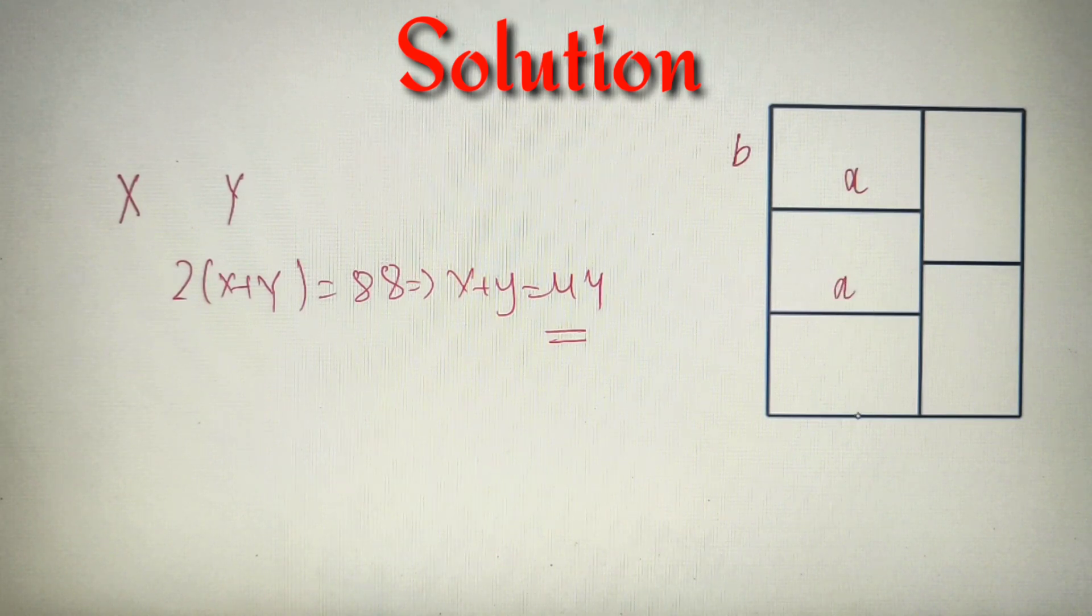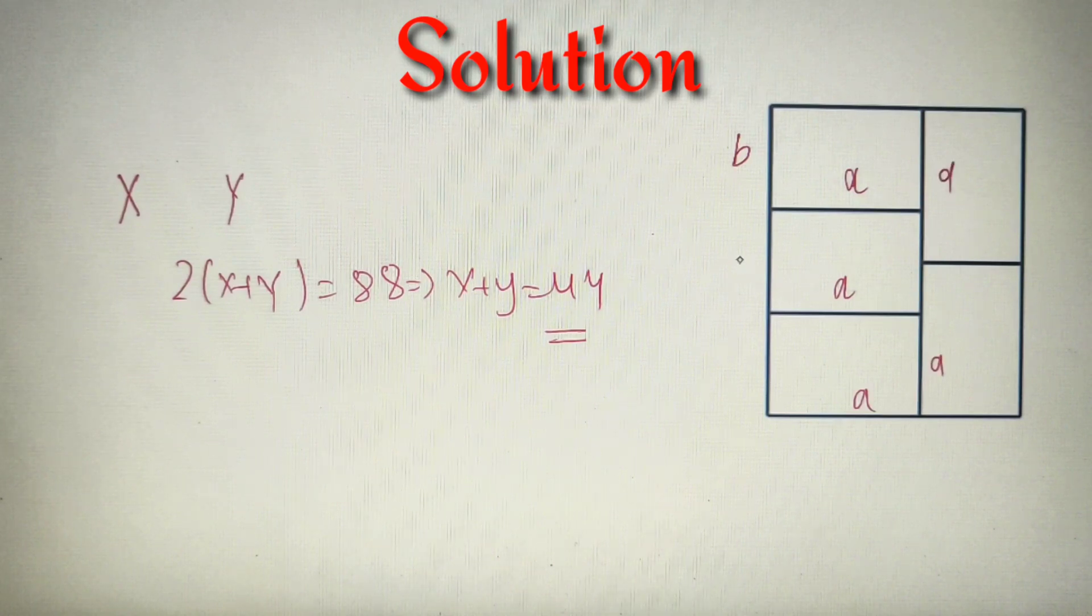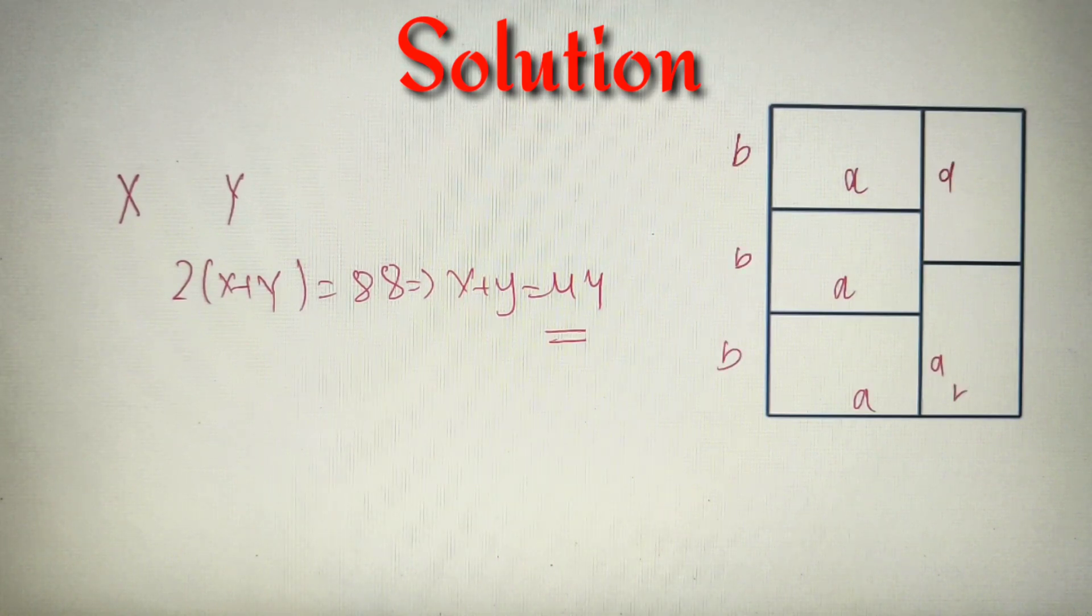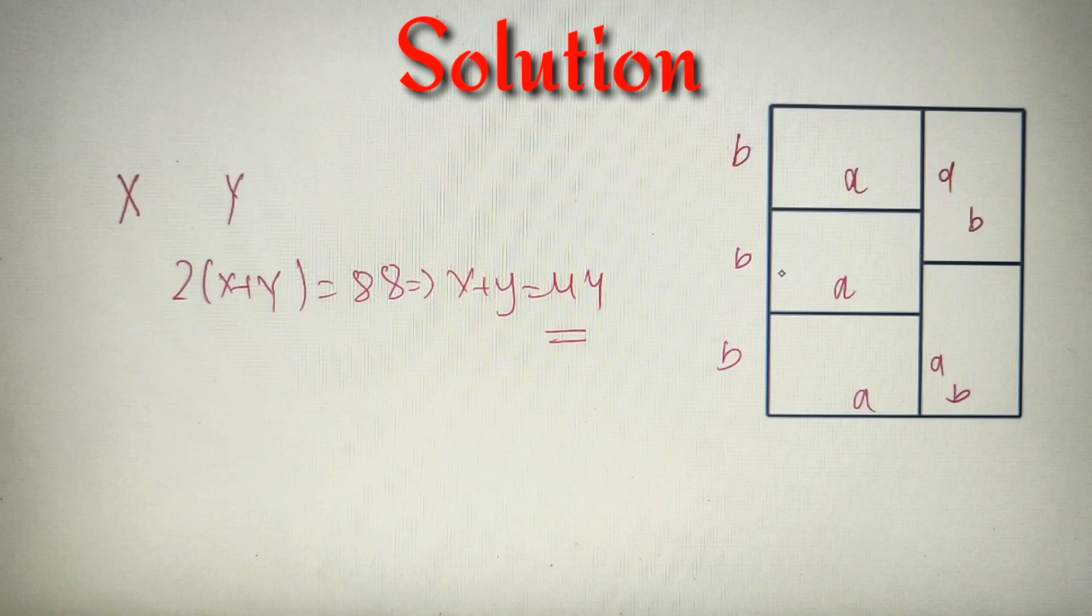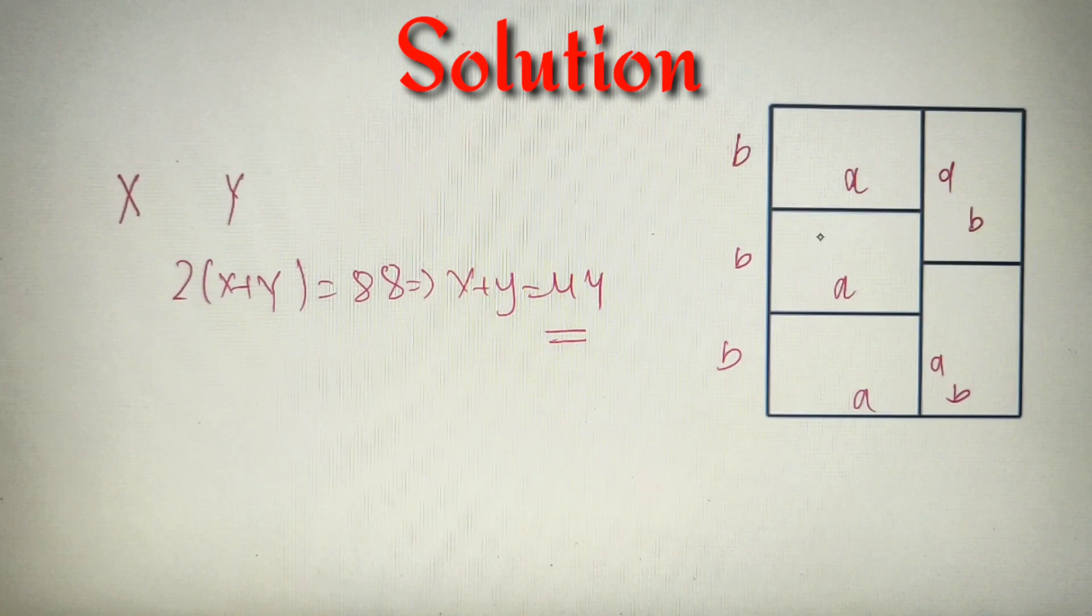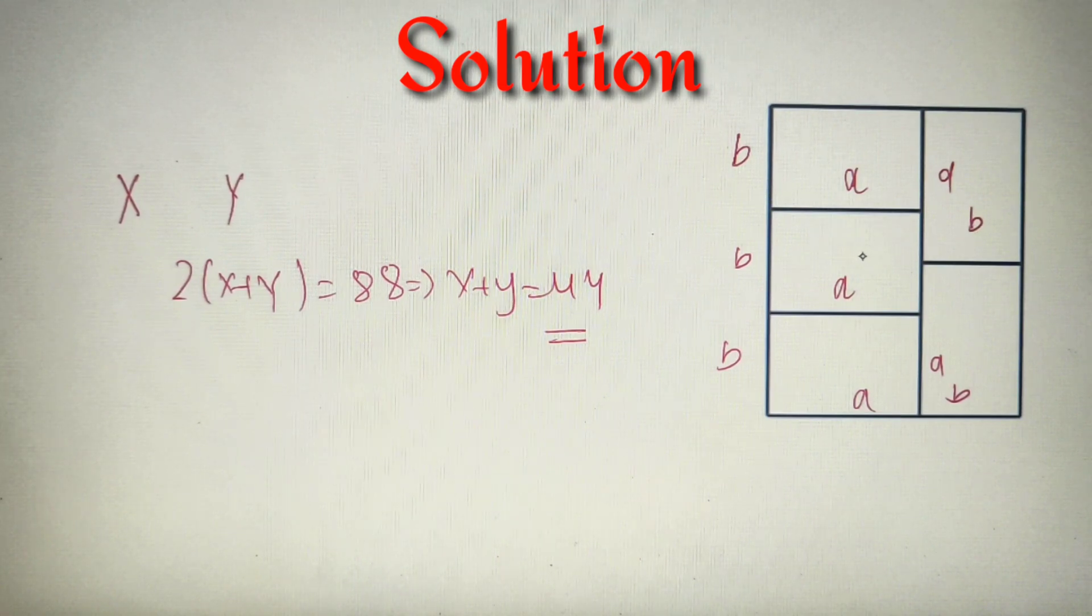So this will become A, A, A, and A as well, and all these B, B, B, and B respectively. So we have got that the smaller rectangles have the dimensions as A and B respectively.